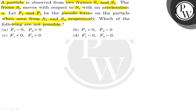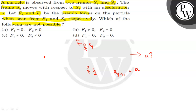In the diagram, this is a particle, this is the S1 frame, and this is the S2 frame. Along the x-axis we can say the acceleration is a i-cap. So S2 moves with acceleration a, meaning the acceleration of S2 with respect to S1 is equal to a.